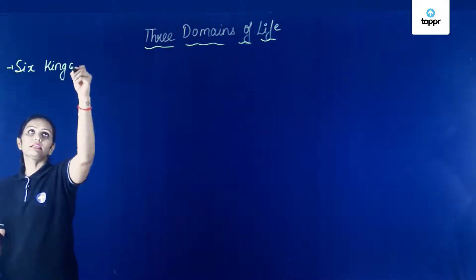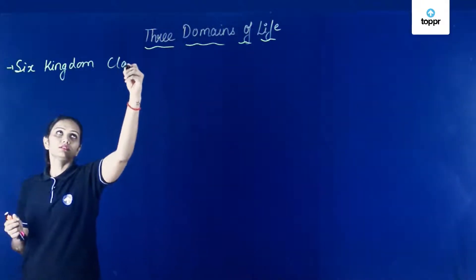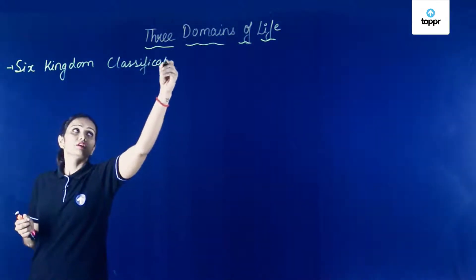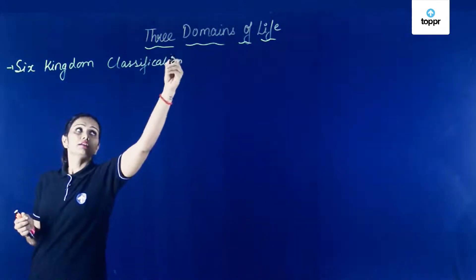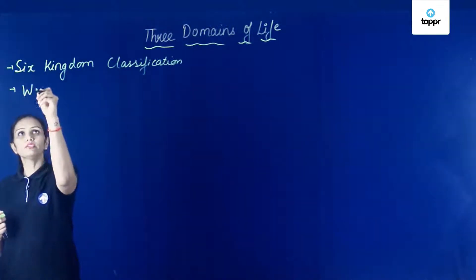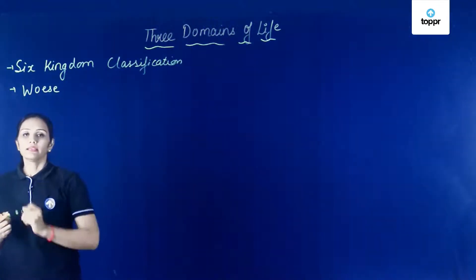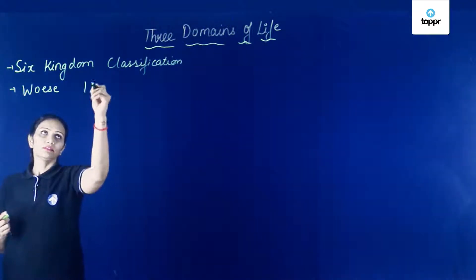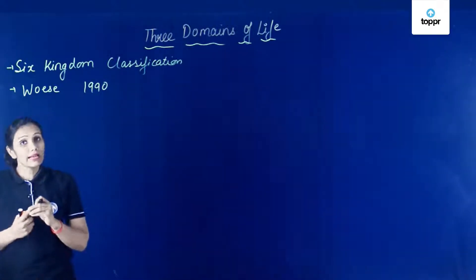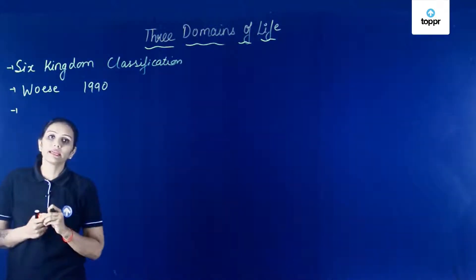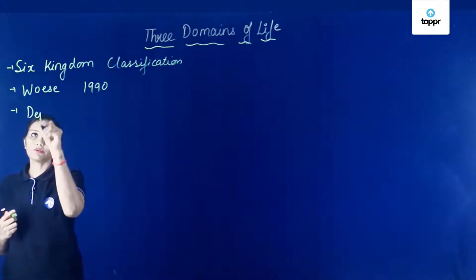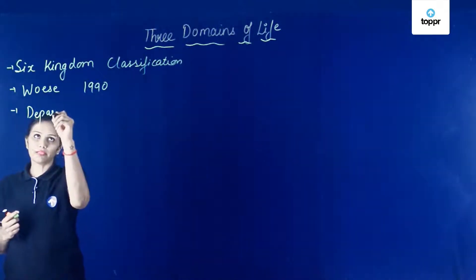Six kingdom classification system. Aur is it propose kiya Woese ne? In year 1990s ke andar. And he was working at University of Illinois in the department of microbiology.